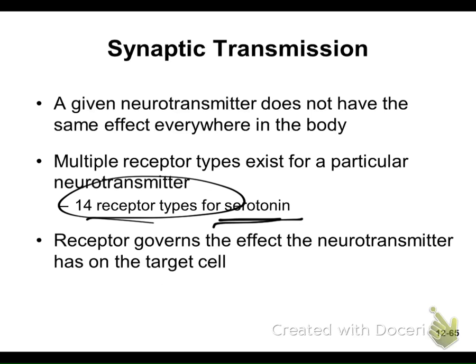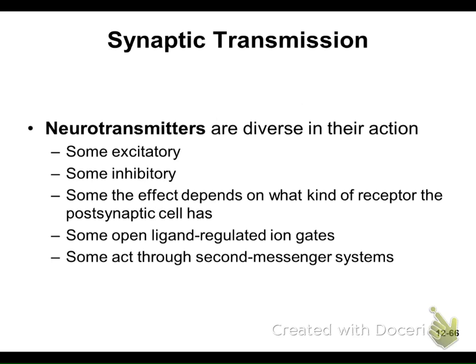Depending on what kind of receptor you have dictates what a particular neurotransmitter does to that cell. Sometimes serotonin would be excitatory — causing the next neuron to be more likely to fire an action potential. But sometimes a neurotransmitter will cause the cell to become less activated, or inhibited, depending on what's going on in the cell and where you are. Some neurotransmitters are excitatory; others can be inhibitory.